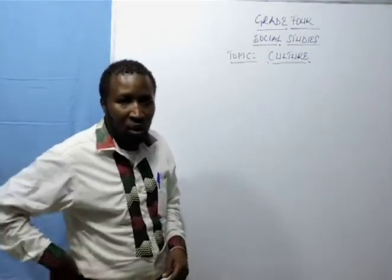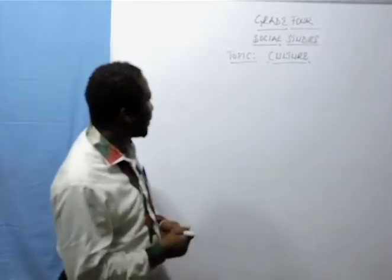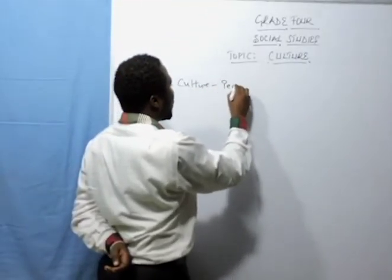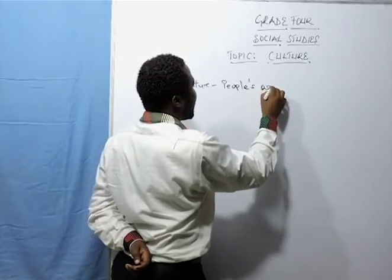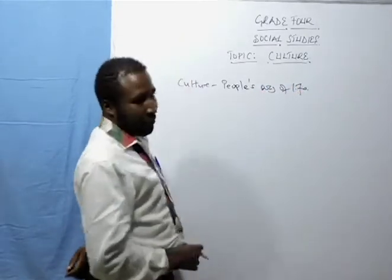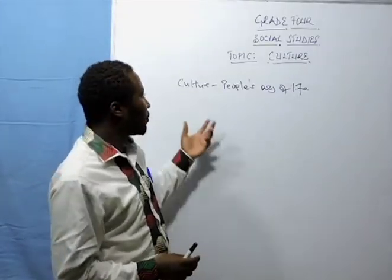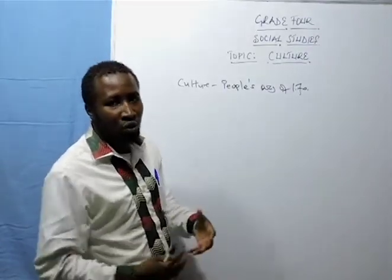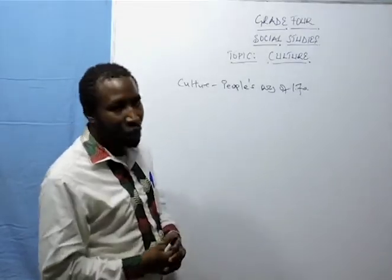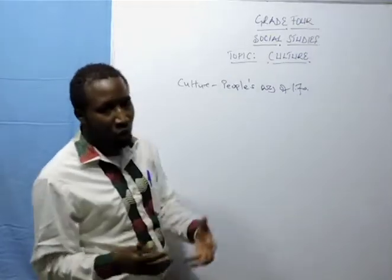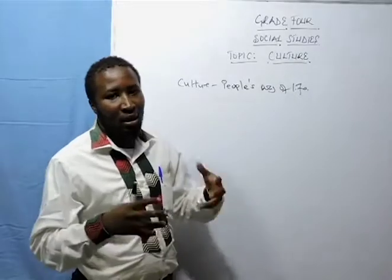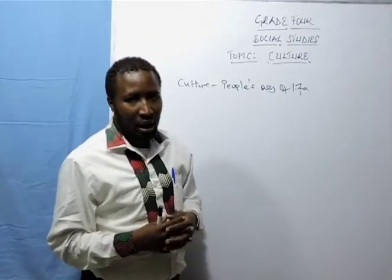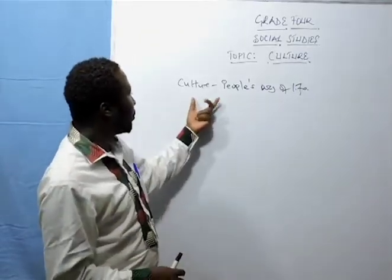As we look at culture, we need first of all to understand the meaning of the word culture. Culture means people's way of life. When we were young, we understood certain values that were instilled in us by our parents — the way people used to dress, the type of food people used to eat. There are certain things that people used to do in a certain way because that's the culture that was instilled in us. Culture is very diverse; we have various aspects that determine or bring out the term culture.